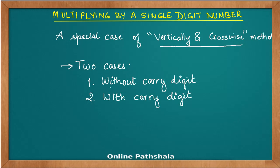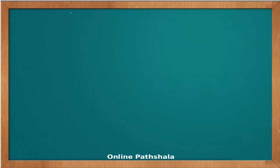In the first case, you will multiply a bigger number with a single digit number which does not involve carry digits. This is just to understand what the method is, and I'm pretty sure you would be aware of it from school. The second case will be when you have carry digits generated during the multiplication. So let's look at a few examples.